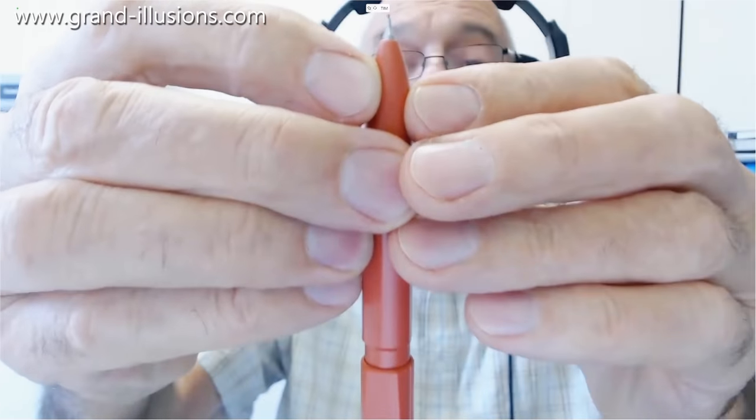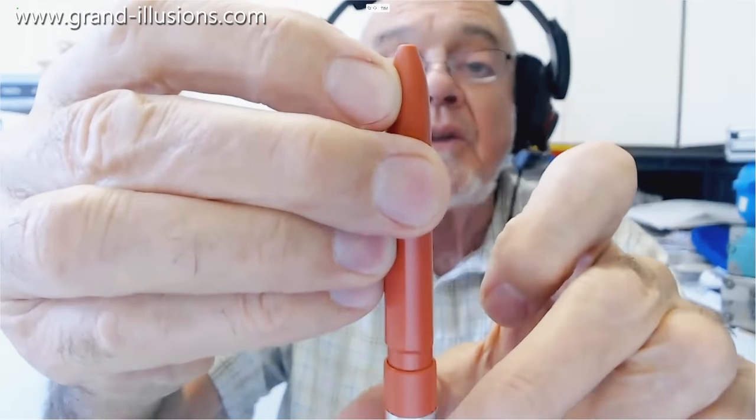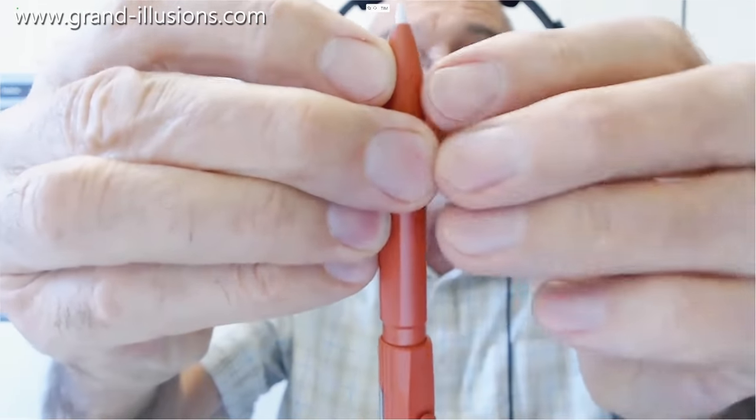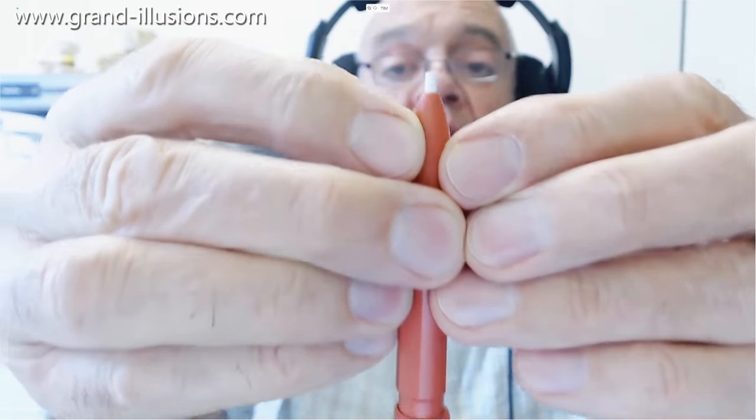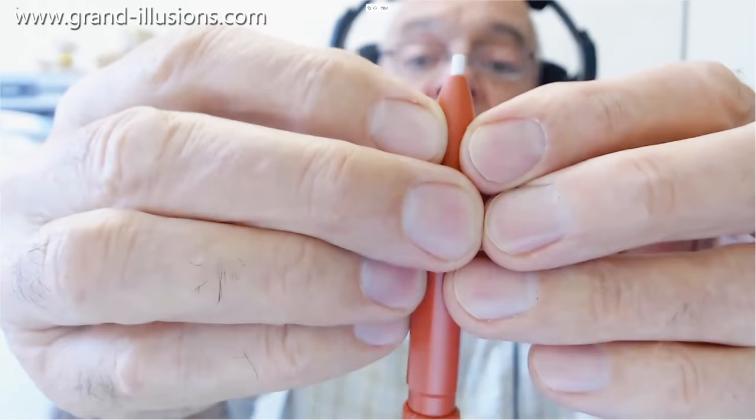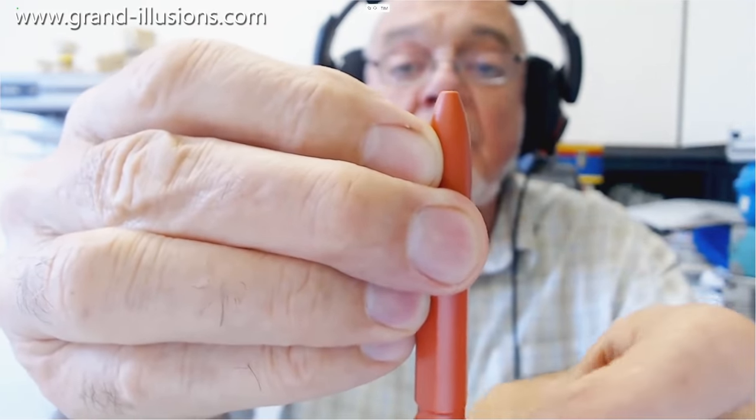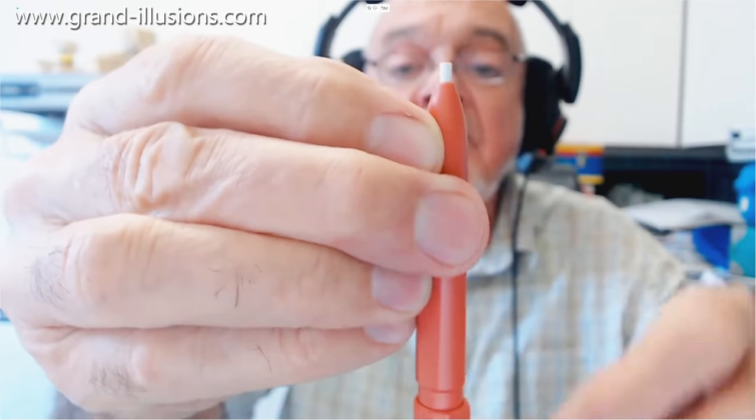But when you want to erase something because you made a mistake, you turn it like that, and turn it the other way, up comes an eraser. Brilliant, very very clever idea of that. Very cute, one way a pencil, the other way an eraser. Very nice design that, I'm very fond of that one.